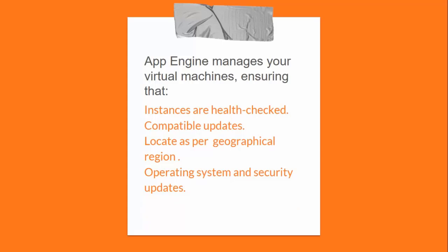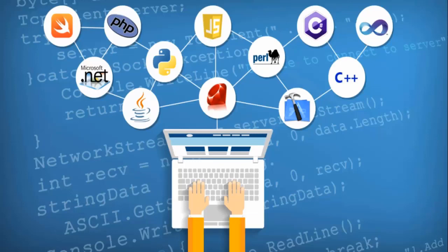You always have root access to Compute Engine VM instances. SSH access to VM instances in the flexible environment is disabled by default, but you can enable root access to your application VM instances if you choose. You can get started with all application support on GAE, including Go, Java 8, PHP, Python, .NET, Node.js, Ruby, and Custom Runtimes.